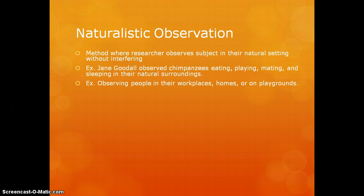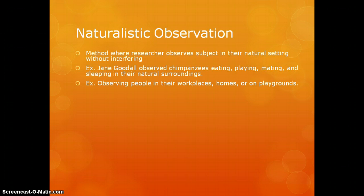Naturalistic observation can also be used with people — they can be observed in their workplaces, homes, or playgrounds. As we discussed in our unit on ethics, it has to be a public place; otherwise, a person has to give informed consent. You're observing the subject without interfering, so if you're watching someone on a playground, you cannot go and join in.